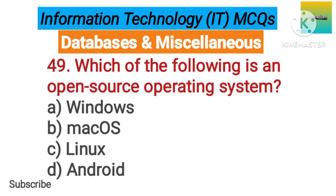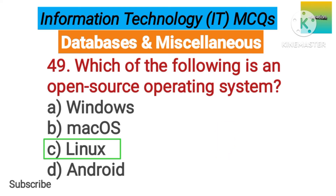Number 49. Which of the following is an open source operating system? Option A: Windows. B: Mac OS. C: Linux. D: Android. The correct answer is option C, Linux.